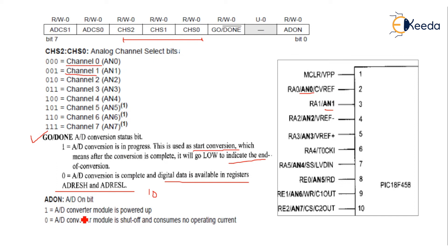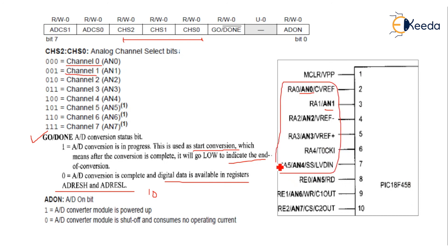ADON: if it is 1, the A-to-D converter module is powered up. If it is 0, the converter module is shut off and consumes no operating current. We must always keep ADON set to 1. As seen in the pin diagram, Port A is almost entirely assigned for analog input, and three pins from Port E are also assigned for analog inputs.